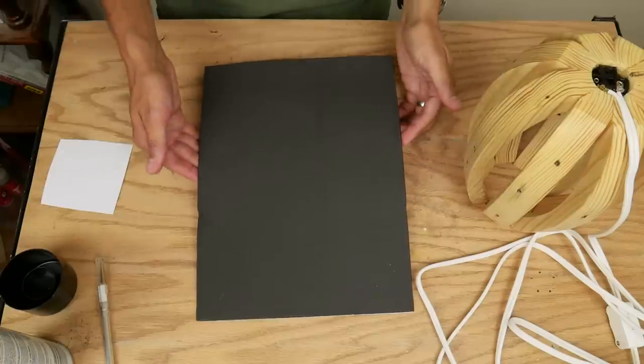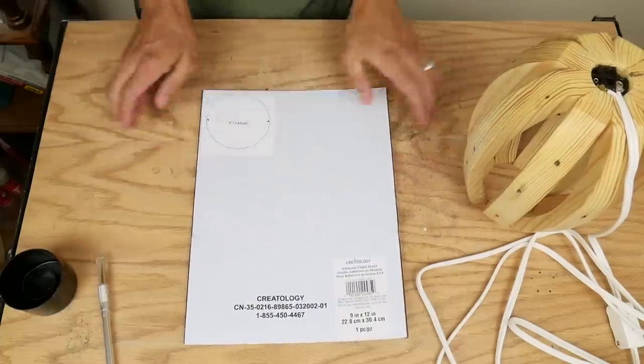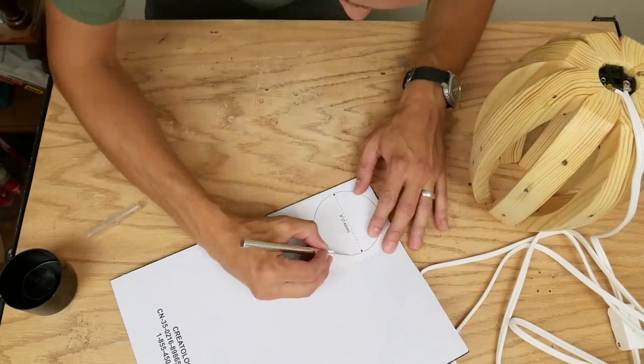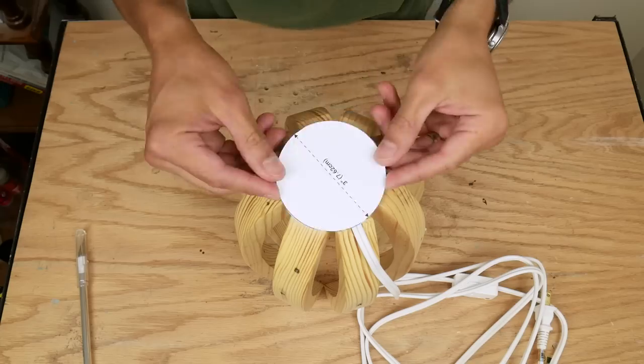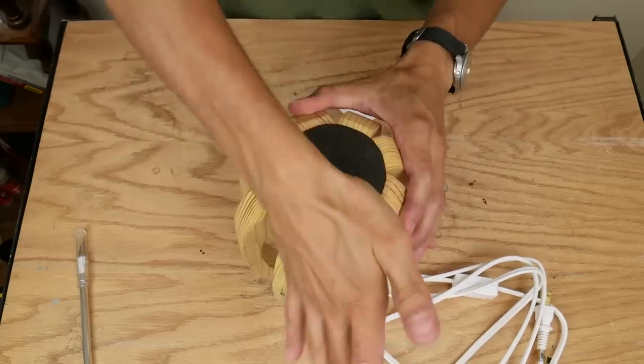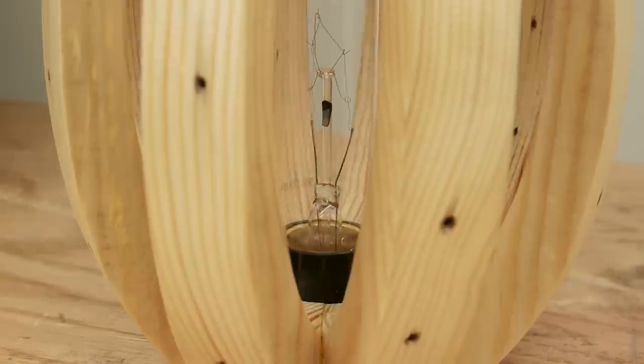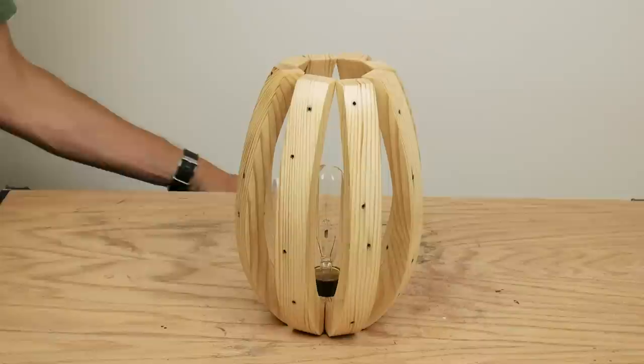I got a piece of black craft foam with adhesive on one side and cut a 3 inch circle out of it. I stuck it to the bottom of the lamp to hide the wiring and prevent the lamp from scratching my table. Then I screwed in the light bulb and plugged in the cord and the lamp was finished.